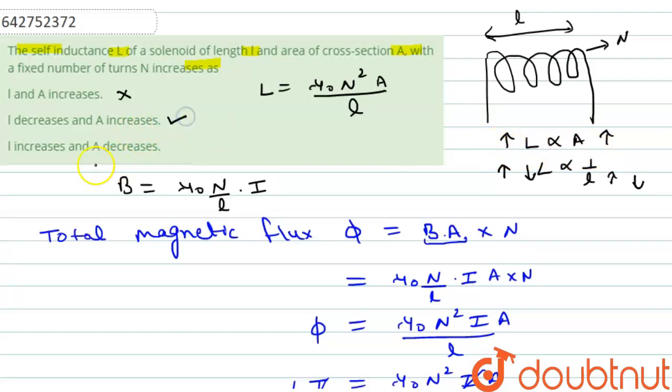So option B is correct. And the option C, L increases and A decreases. So if L will increase, then inductance will decrease. So this is incorrect option. So the correct option is B.